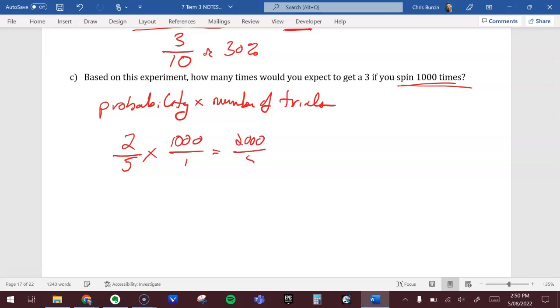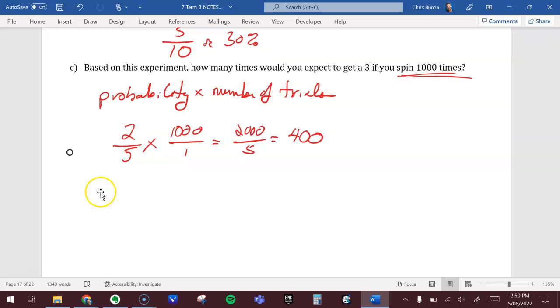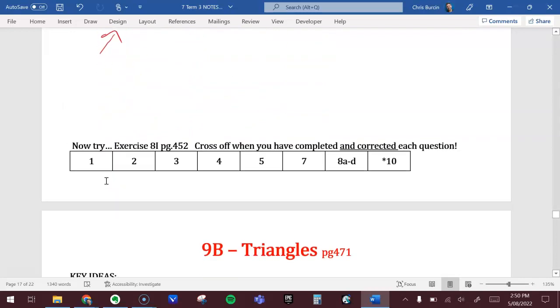You can probably work that out in your head. If we spun a thousand times, we would expect three to come up 400 of those times, based on the experimental probability.